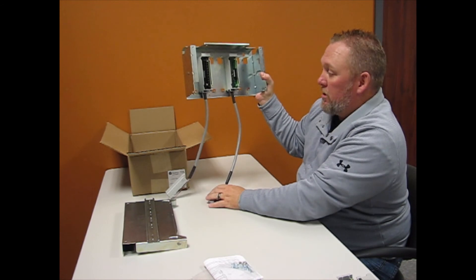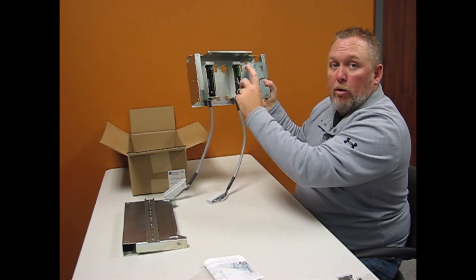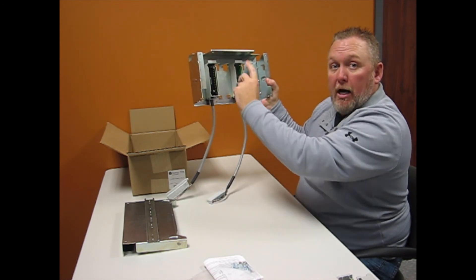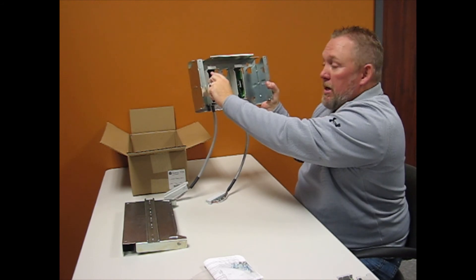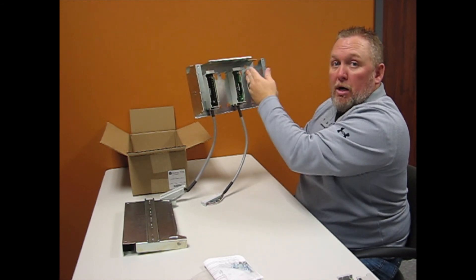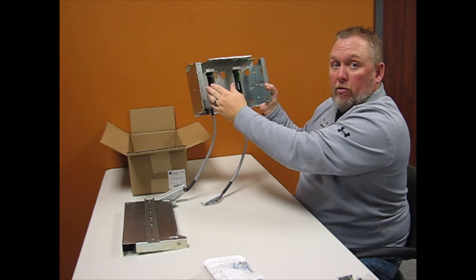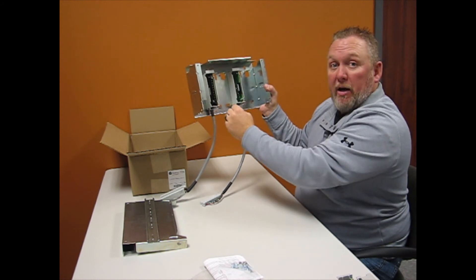Once you have the conversion modules locked into place, you will take the terminal blocks out of the Slick 500 IO and plug them in here. So make sure you stay in order of the IO cards that you have in your Slick Rack that you are going to use on your Compact Logix.